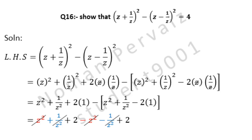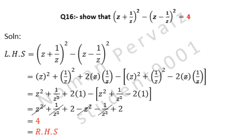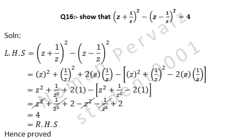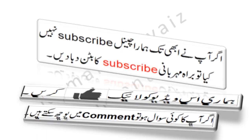z² + 2 plus 2 becomes 4, which is equal to the right-hand side as shown in the question above. Hence proved — left-hand side is equal to right-hand side. You can easily ask questions in the comments below this video.